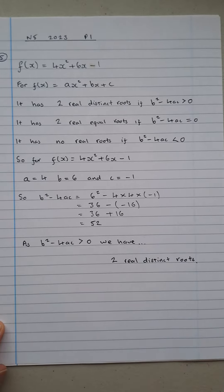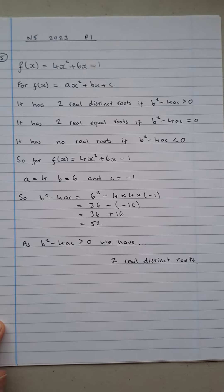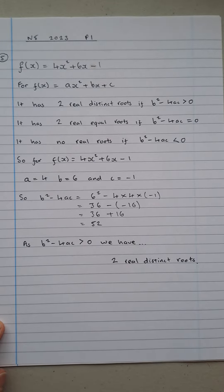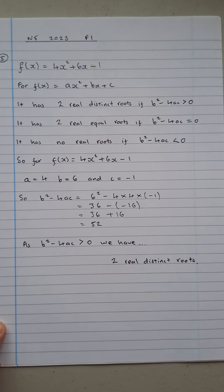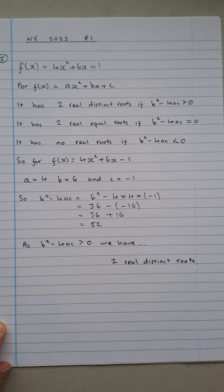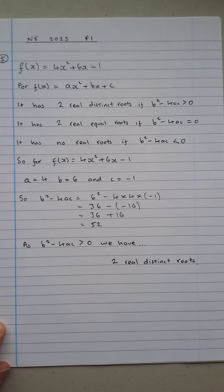Hi guys, Mr. Lees here. I'm doing the Mathematics National 5 paper, Paper 1 from 2023, and we're going to be doing question 5. We're presented with a function f(x) = 4x² + 6x - 1 and we're asked to determine the nature of the roots.